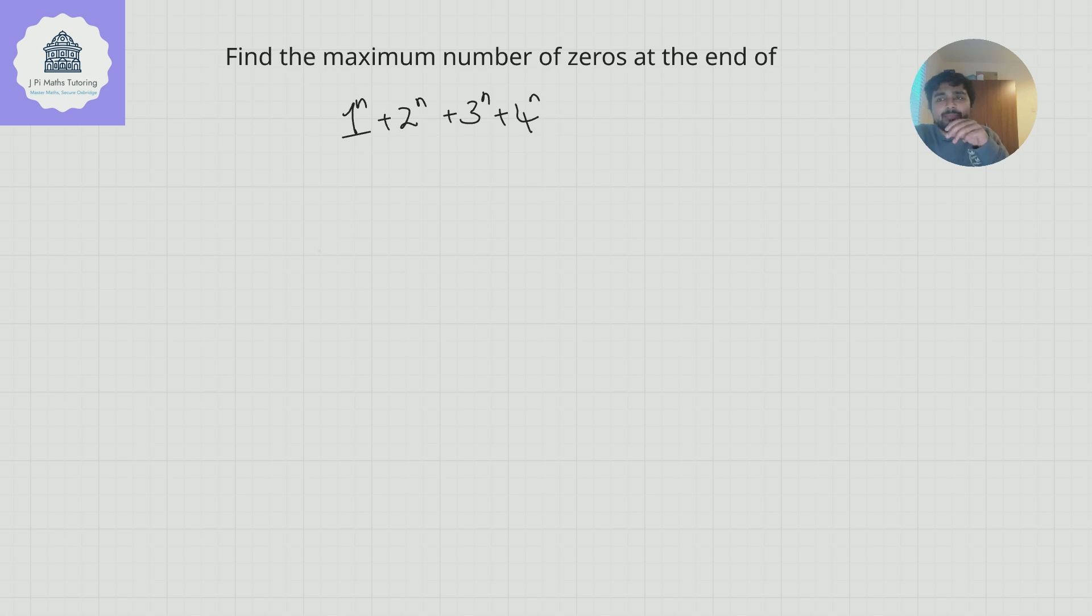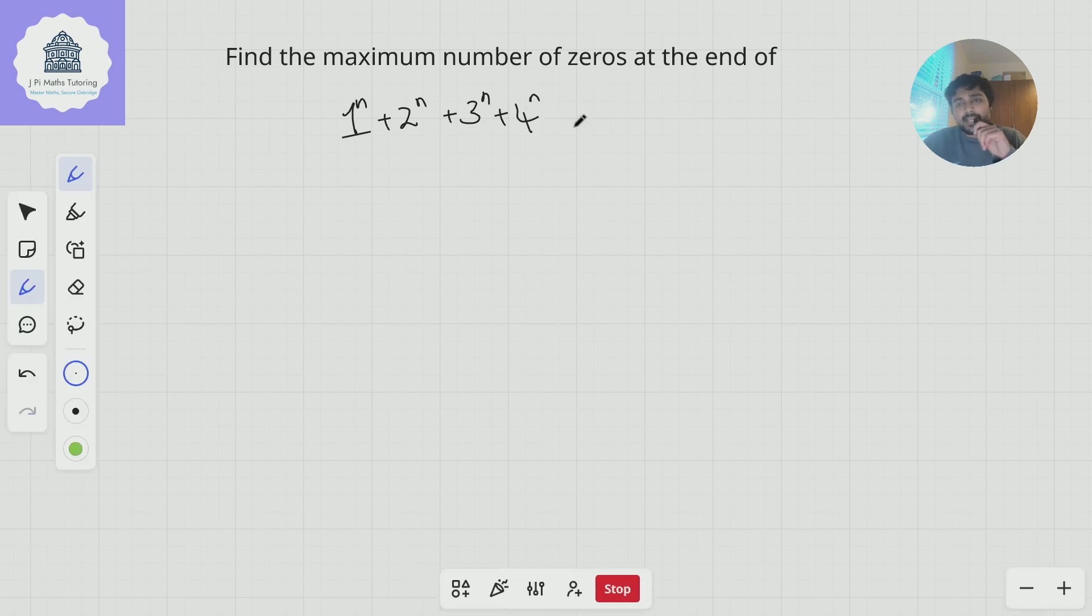Today I've got a problem which was on an IMO team selection test. We want to find the maximum number of zeros at the end of 1^n + 2^n + 3^n + 4^n, where n is any natural number. Do have a go at this problem - it's quite a nice one, but not too difficult.